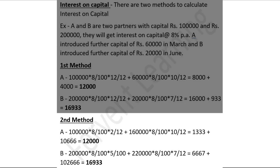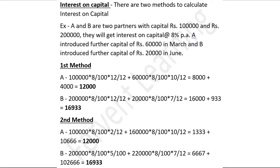Again in case of B: two lakh was the first investment made in January, rate of interest eight by hundred, into five by twelve — from January to May, five months. Then add: two lakh twenty thousand into eight by hundred into seven by twelve — seven by twelve means from June to December. From the first calculation we get six thousand six hundred sixty-seven, and from the second we get ten thousand two hundred sixty-six. Total is sixteen thousand nine hundred thirty-three — same as the first method.